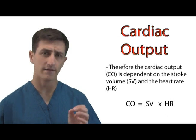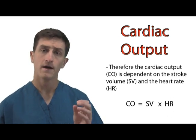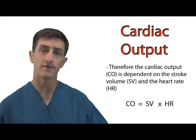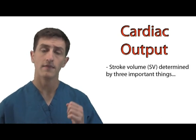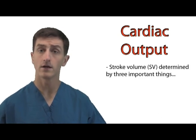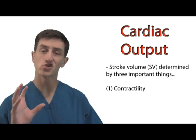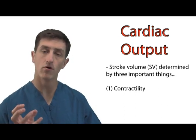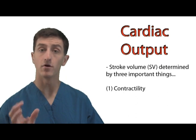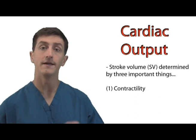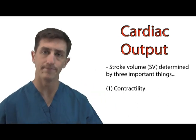Now let's talk in more depth about stroke volume. Stroke volume is dependent on a couple of key topics. The first is contractility. If the heart is contracting with more force, it's going to be able to pump more blood per beat, increasing the stroke volume, which will increase the cardiac output.